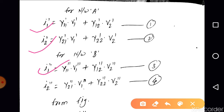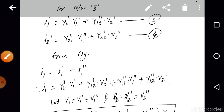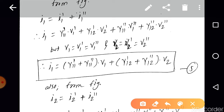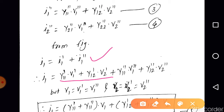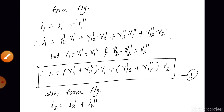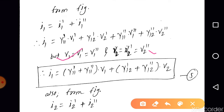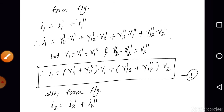From the figure, I1 = I1-dash + I1-double-dash. Replacing I1-dash with equation 1 and I1-double-dash with equation 3, and substituting V1-dash = V1-double-dash = V1 and V2-dash = V2-double-dash = V2, we can take V1 and V2 common and write: I1 = (Y11-dash + Y11-double-dash)·V1 + (Y12-dash + Y12-double-dash)·V2.